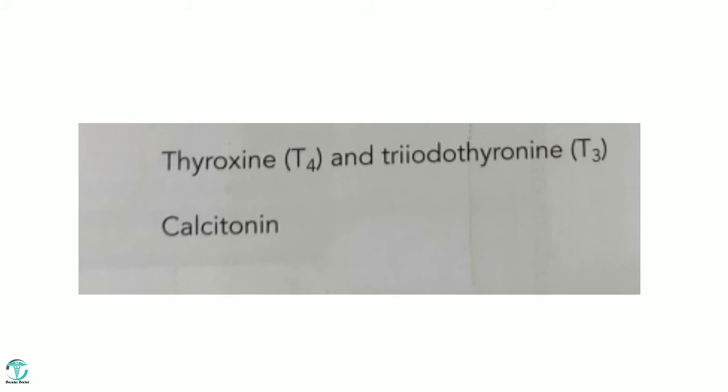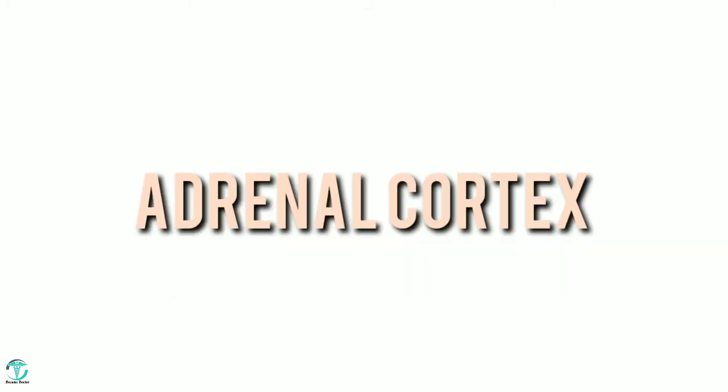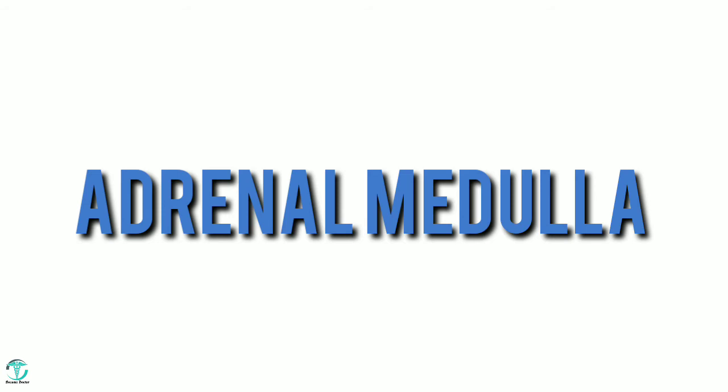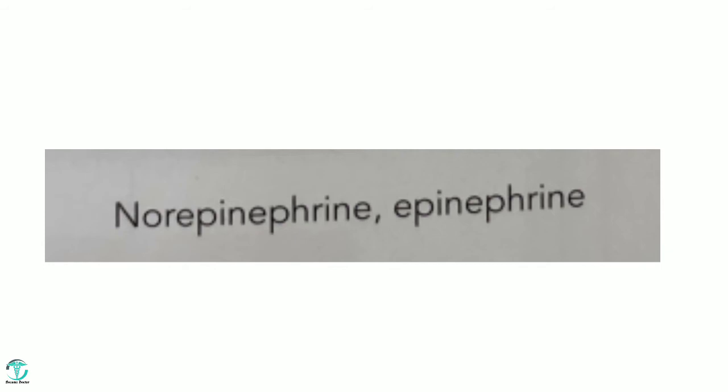Now for the adrenal cortex — it secretes cortisol and aldosterone. The sixth gland, adrenal medulla, secretes norepinephrine and epinephrine.